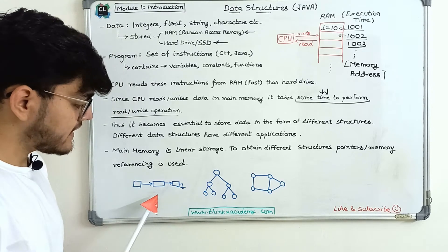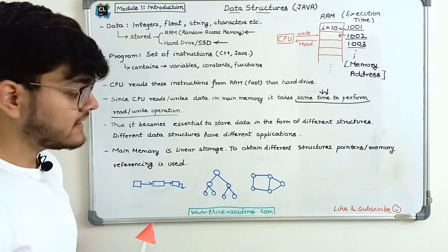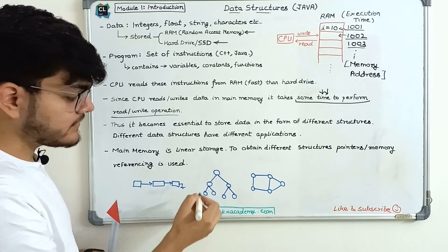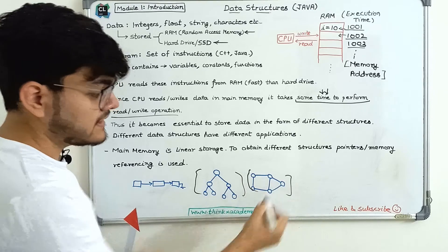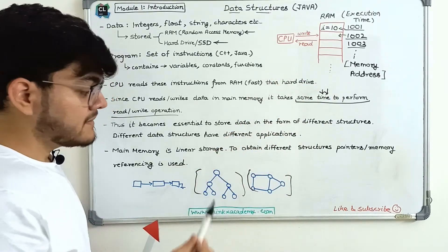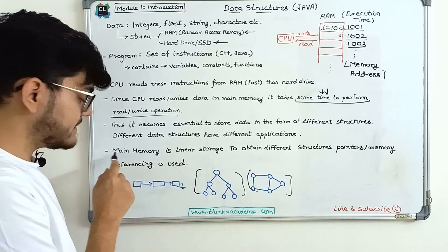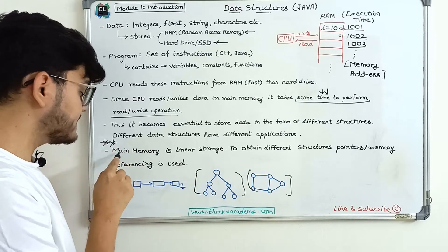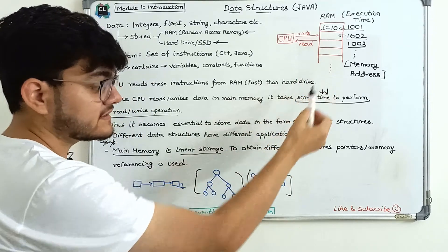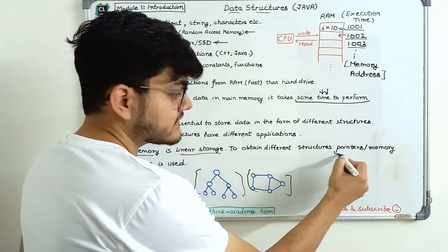Here I have drawn three different structures. These circular nodes are the data itself — you can see they are connected. Now to get these data structures, the thing is that RAM is linear, so all of this data is stored in linear format only. But if we want to connect one node with another, we can use pointers. The main memory is a linear storage, so to obtain these different structures, we are going to use pointers or memory references.